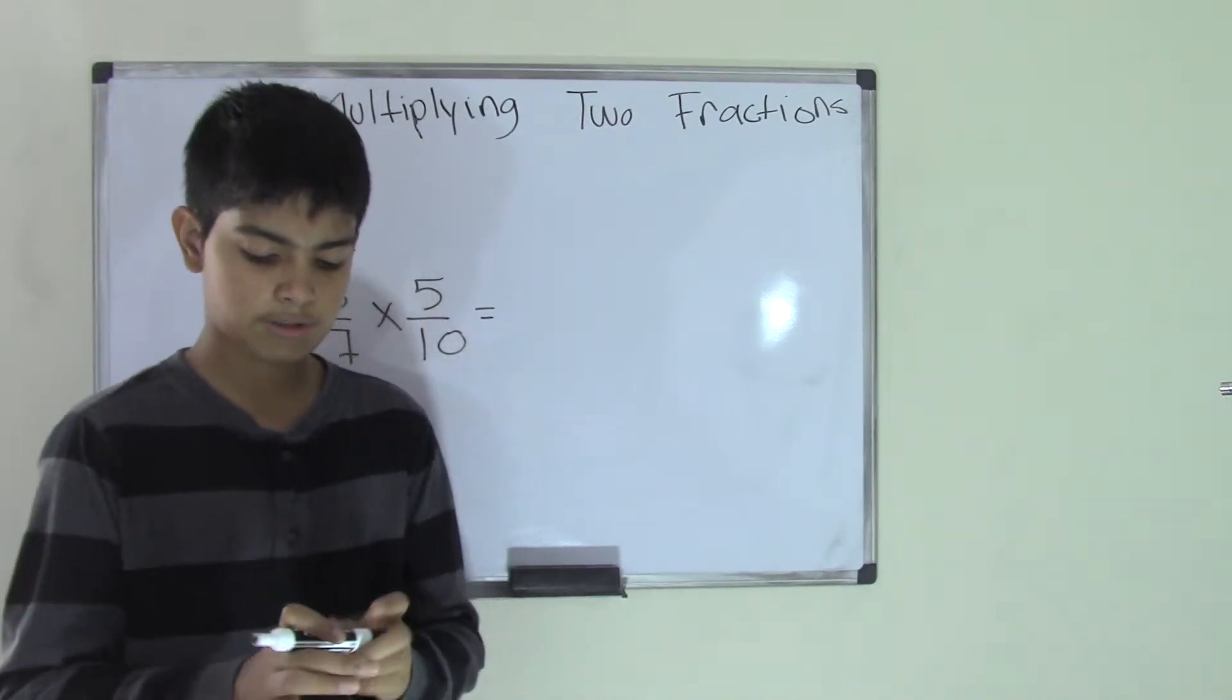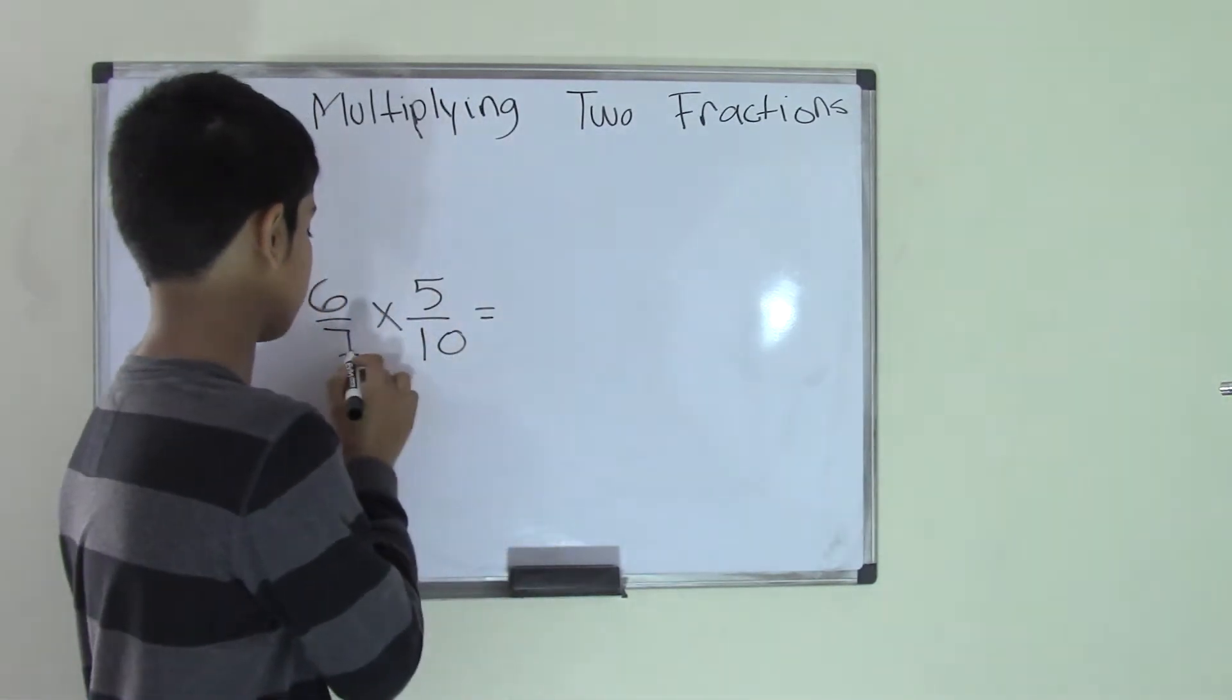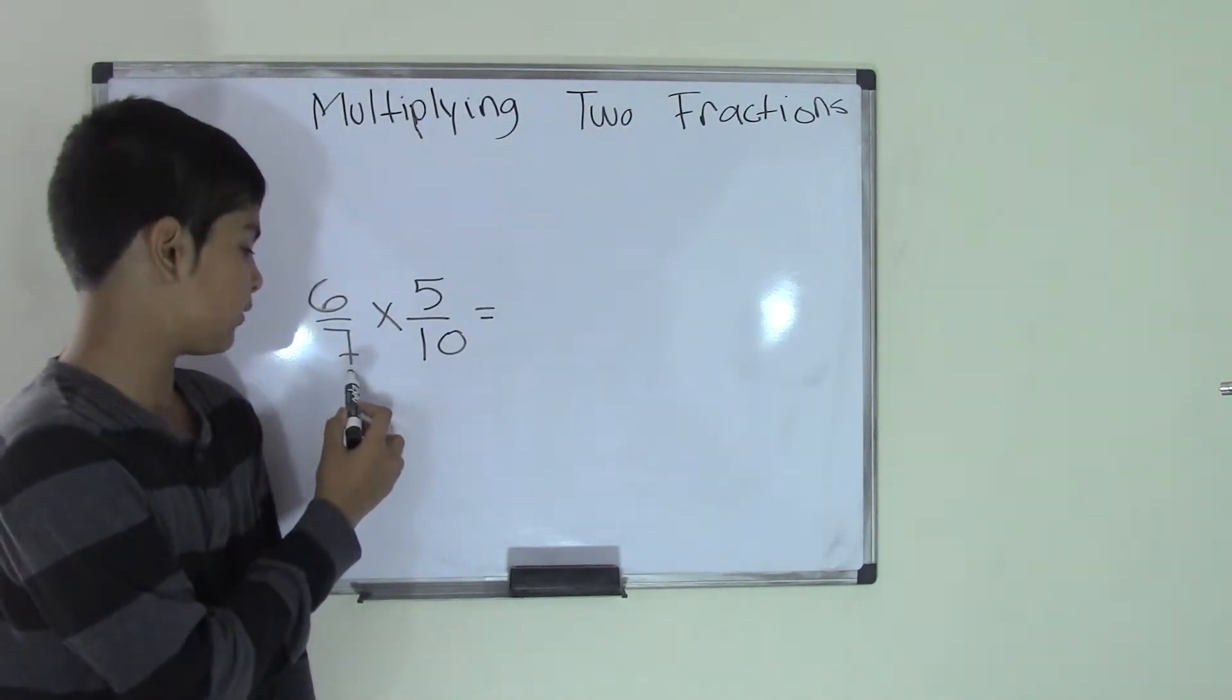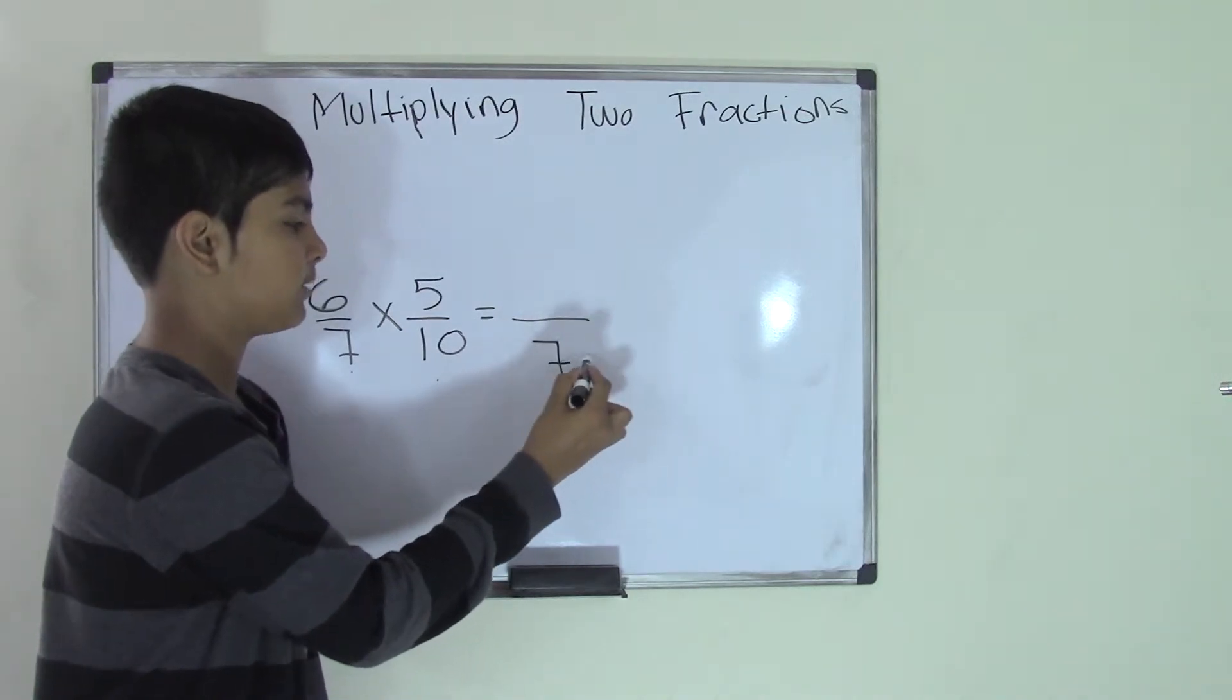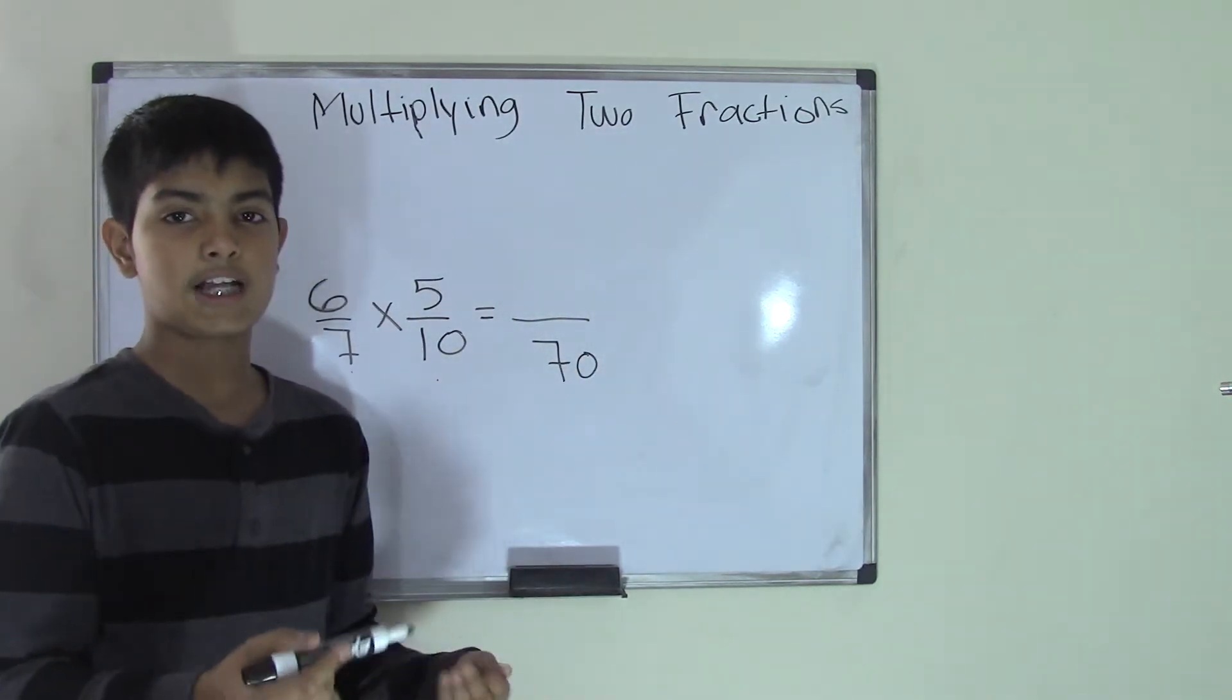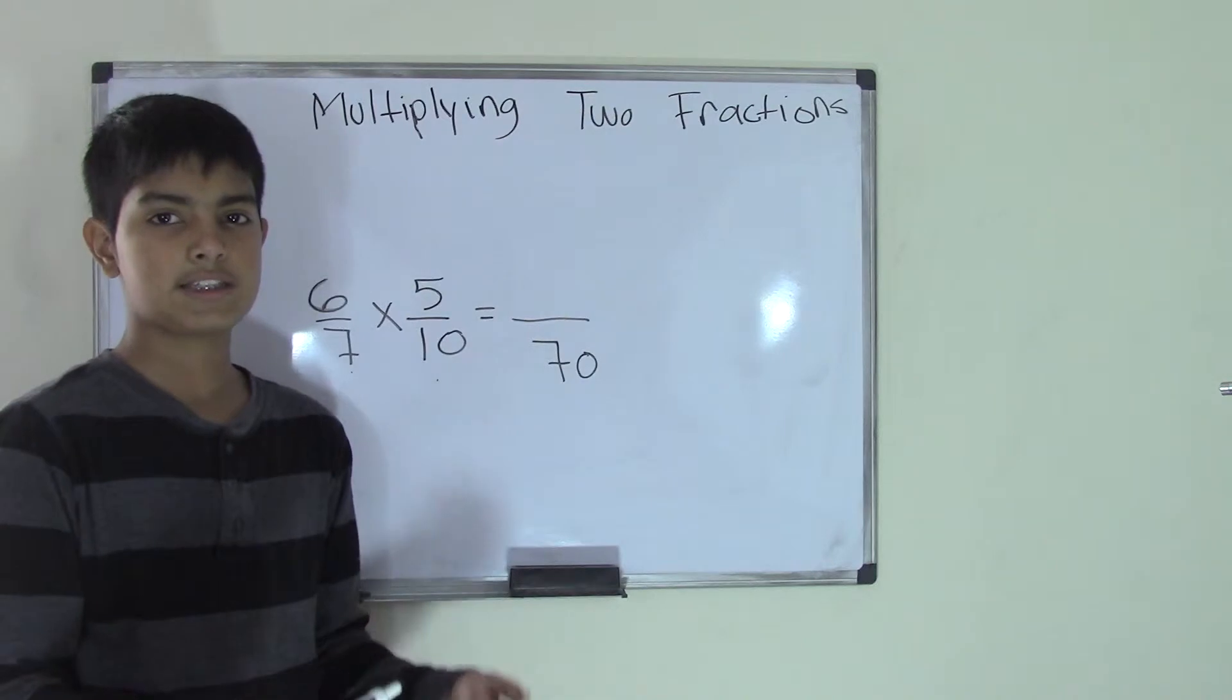So this is how you do it. We'll simply multiply. So first we multiply the denominators, which are 7 and 10, so we multiply them. 7 times 10 is 70, because we know that 10 times any number is that number plus a 0.